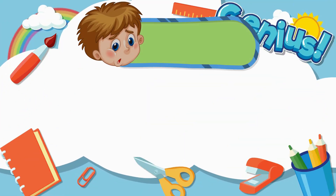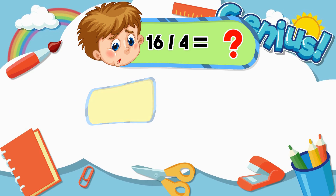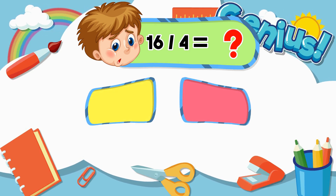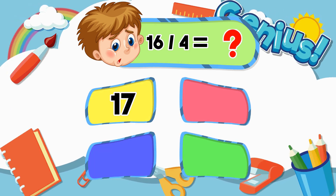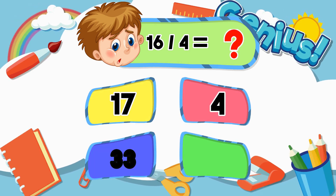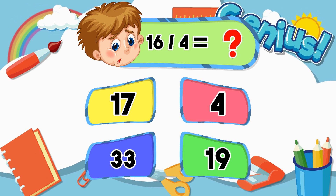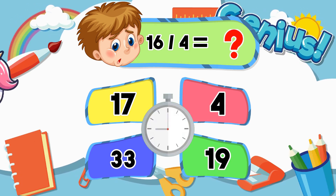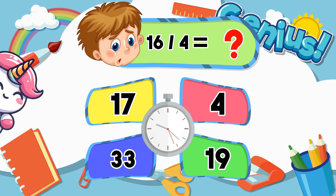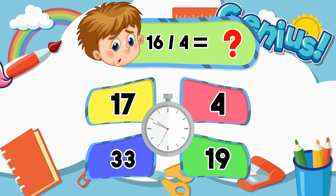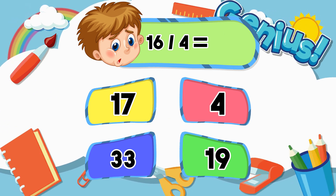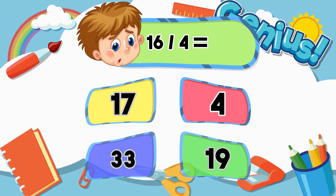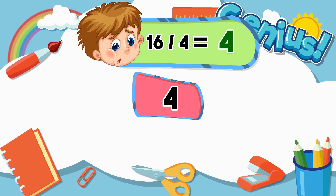What is 16 divided by 4? 4, 17, 33, 19. Answer: 4.